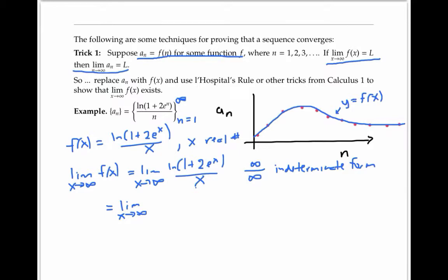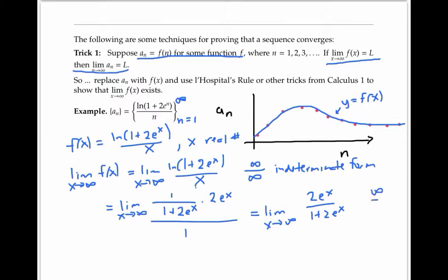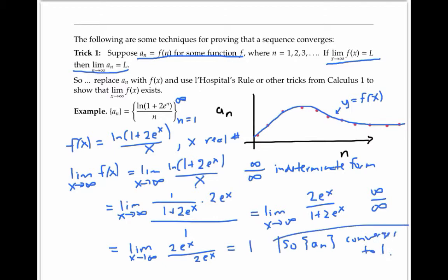The derivative of the numerator is (1 / (1 + 2e^x)) times 2e^x, using the chain rule, and the derivative of the denominator is just one. We can take derivatives here because we're thinking of x as a real number, not just an integer. Simplifying, we still have an infinity over infinity indeterminate form, so let's take the derivatives again. The derivative of the numerator is now 2e^x, and the derivative of the denominator is also 2e^x, so our limit is one. Since our function converges to one, our sequence also converges to one.